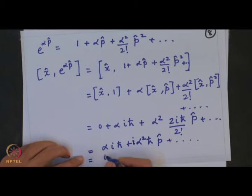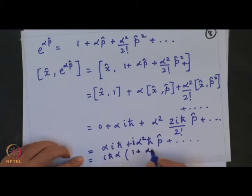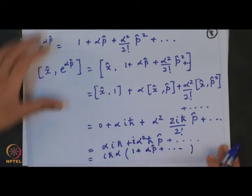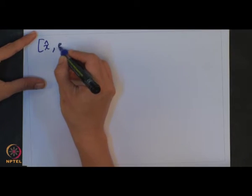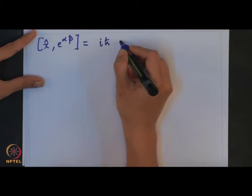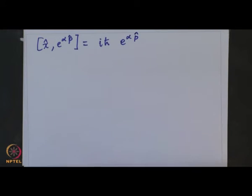In general form I can factor out iℏα, giving iℏα times (1 + αp̂ + ...), and this is nothing but again an exponential series. So [x̂, e^(αp̂)] = iℏα·e^(αp̂). This is what I get after performing the calculation.